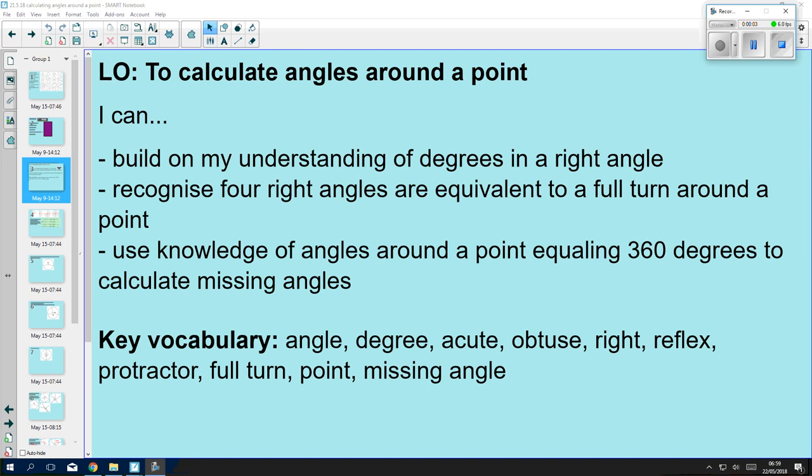Today we're looking at calculating angles around a point, building on our work from last week where we looked at calculating missing angles on a straight line. You can pause here to read the success criteria. Essentially, it boils down to using your knowledge of right angles and straight lines to help you understand how to calculate angles around a point equaling 360 degrees.